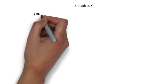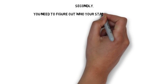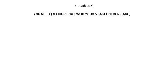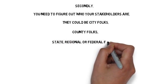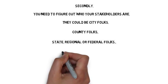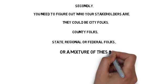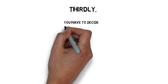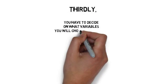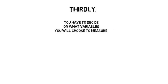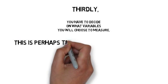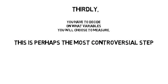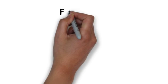Secondly, you need to figure out who your stakeholders are. They can be city folks, county folks, state, regional, or federal folks, or a mixture of these. Thirdly, you have to decide on what variables you will choose to measure. This is perhaps the most controversial step.